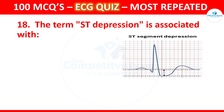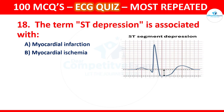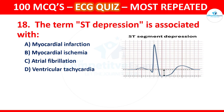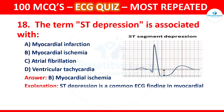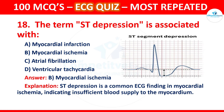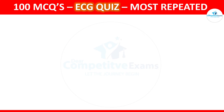Question 18: The term ST depression is associated with which condition? Options are myocardial infarction, myocardial ischemia, atrial fibrillation, or ventricular tachycardia. The correct answer is myocardial ischemia. ST depression is a common ECG finding in myocardial ischemia, indicating insufficient blood supply to the myocardium.